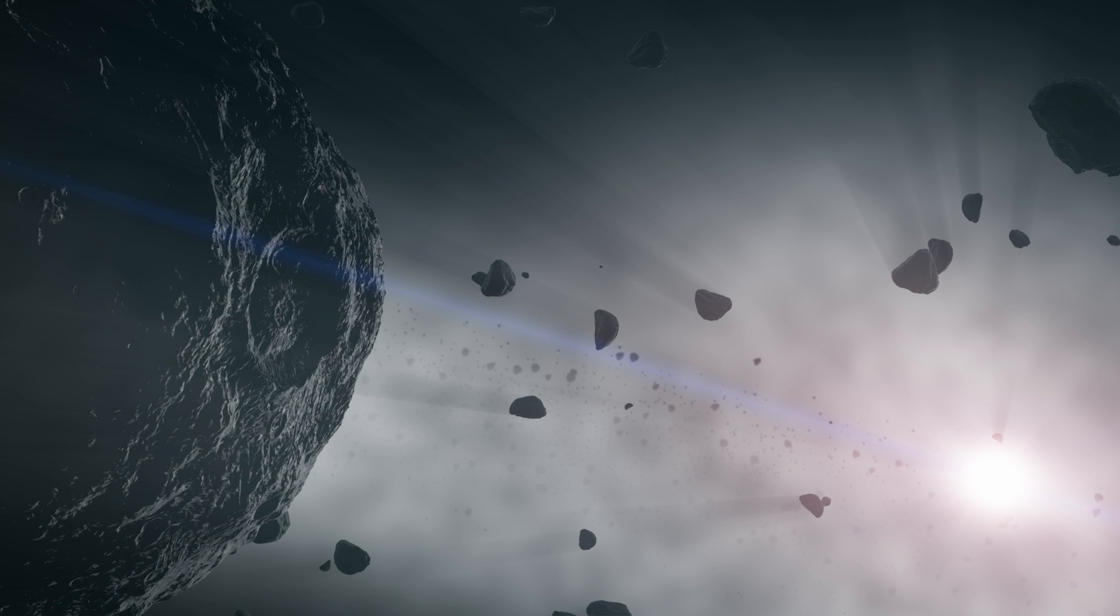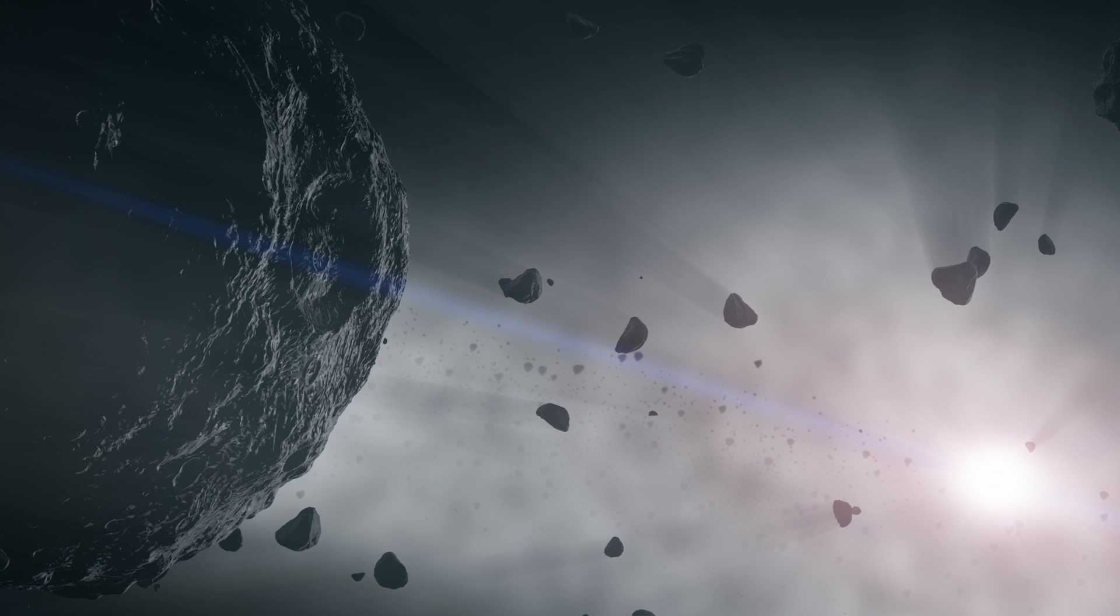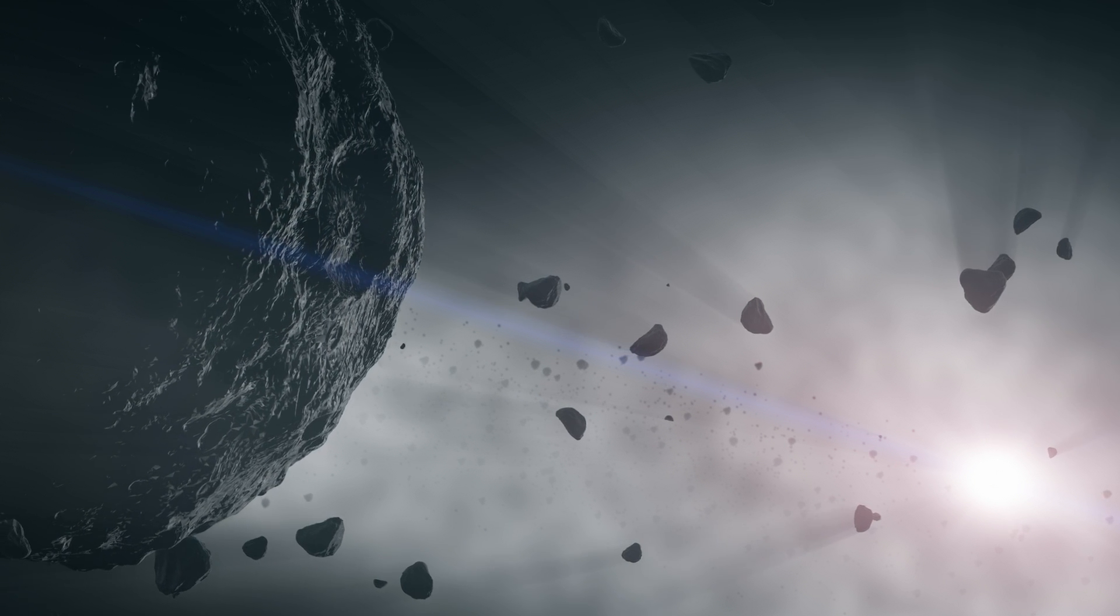Beyond the snow line, where there is more solid material to coagulate and initiate the planet formation process, planetary formation is thought to be most efficient.